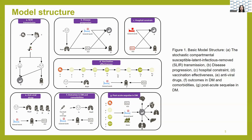Notably in part F, the comorbidities in diabetes patients include conditions like heart failure, peripheral vascular disease, liver disease, cancer, dementia, and so on. We did not consider the situation in children aged under 18 years old. For part G, we focus on two groups: patients without prior diabetes who develop new-onset diabetes, and diabetes patients who experience new-onset comorbidities.